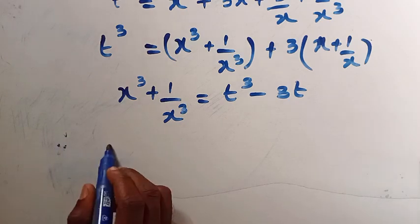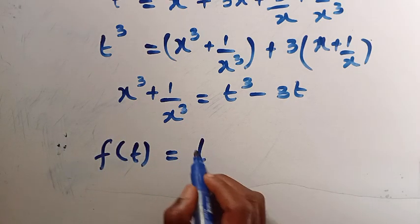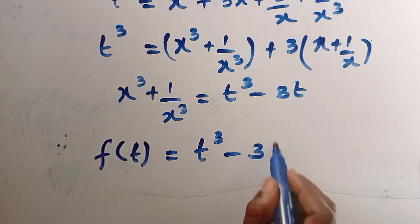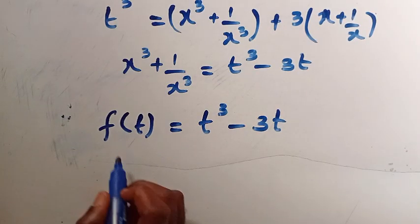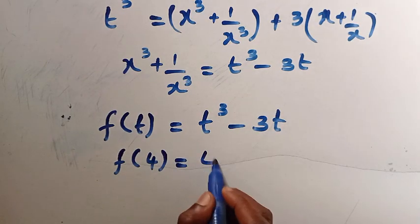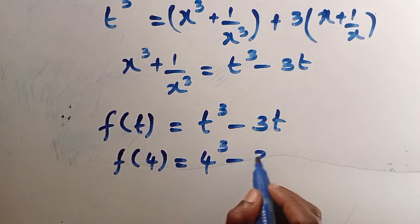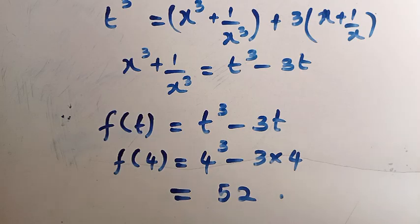Substituting back, we have f of t equals t cubed minus 3t. Changing t to x and evaluating at x equals 4: f of 4 equals 4 cubed minus 3 times 4 equals 64 minus 12, which gives us 52. This second method is more straightforward. Thanks for watching and see you in the next video — never stop learning, bye!